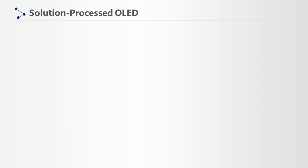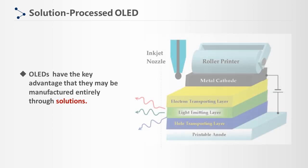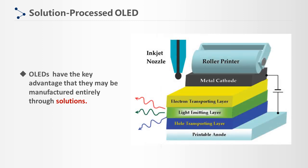OLEDs have the key advantage that they may be manufactured entirely through solution processes, making them more suitable for low-cost, large-area flexible displays and white lighting panels. OLEDs require a multi-layer device structure to ensure good performance, which includes a transparent and conductive indium-tin oxide anode, a hole transporting layer, an emissive layer, an electron transporting layer, and a metallic cathode.